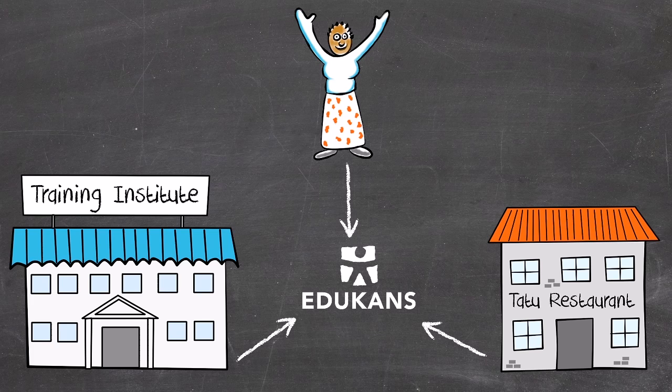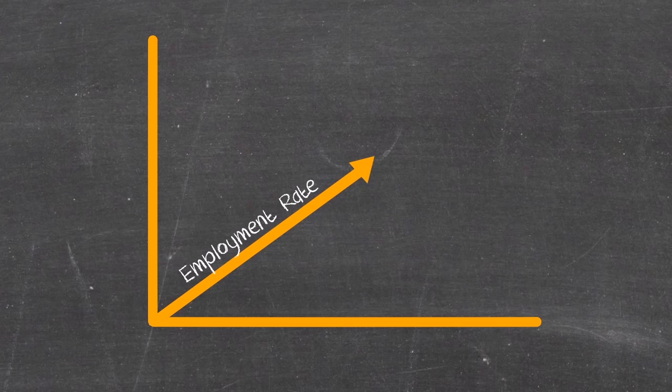To be successful, Educans make sure all three parties are linked. This method is very unique and leads to a stronger workforce and better youth employment rates.